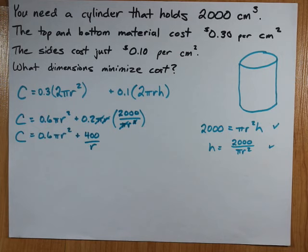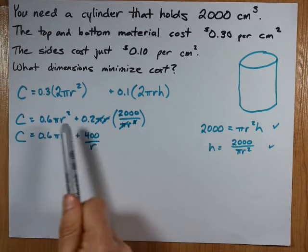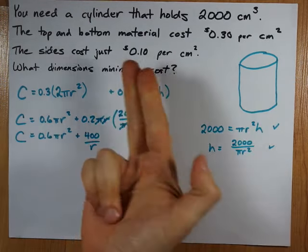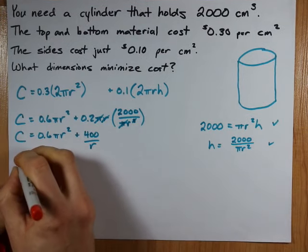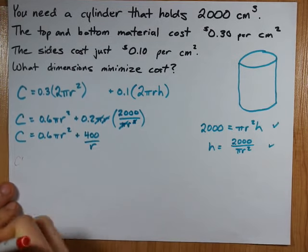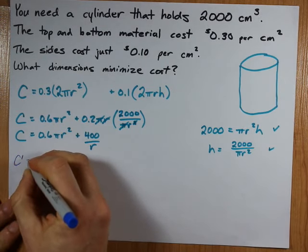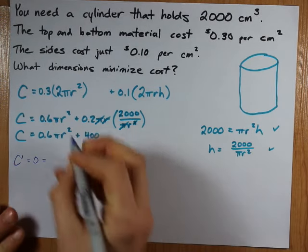All right. So this is a cost function dependent only on one variable, r. To minimize cost, you take the derivative and you set that equal to 0. So, c prime, oh, that pen is not going to work, let's try another one. c prime, which I'm going to set equal to 0 is...